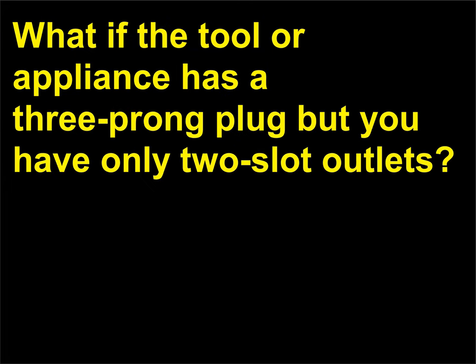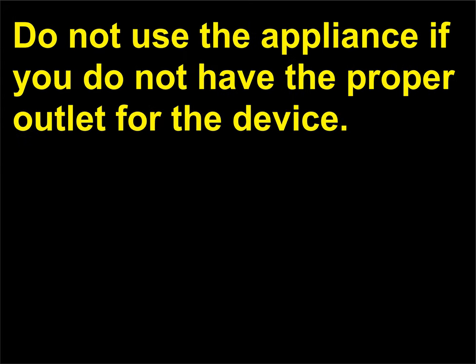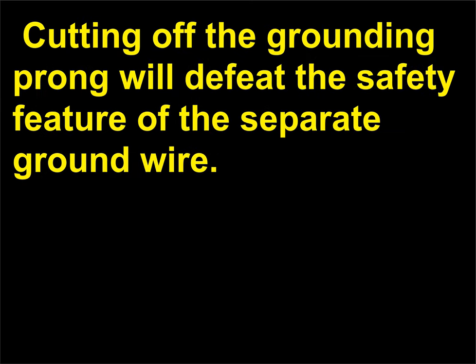What if the tool or appliance has a three-prong plug but you have only two-slot outlets? Do not use the appliance if you do not have the proper outlet for the device. Cutting off the grounding prong will defeat the safety feature of the separate ground wire.